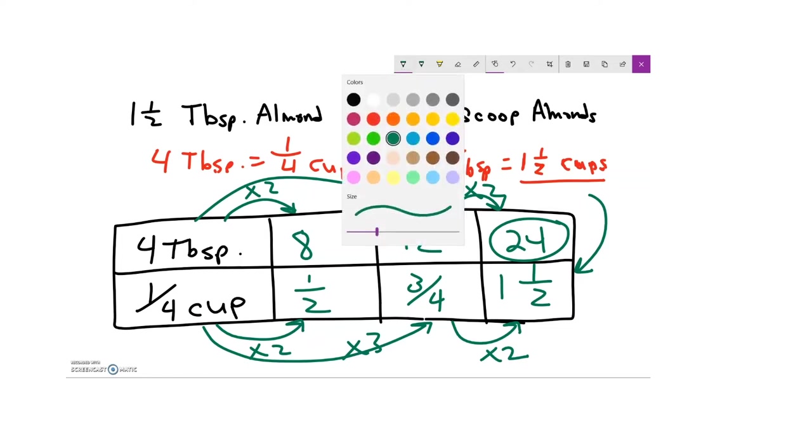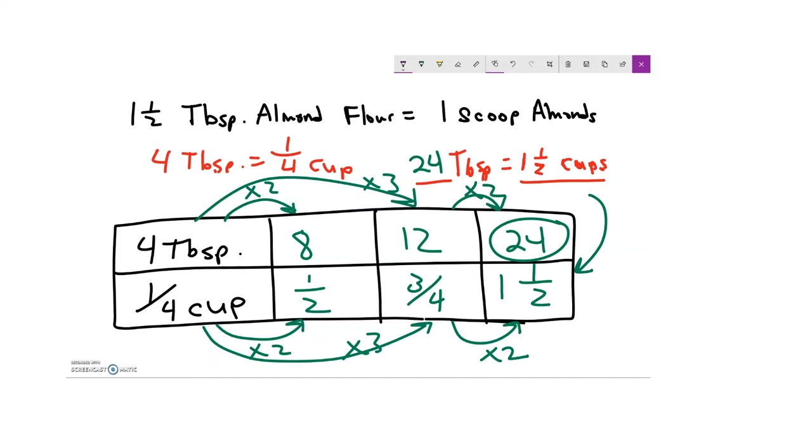Another way I could have done that is to figure out how many times does a fourth of a cup go into one and a half cups. And if I know that that is six, I can always multiply top and bottom by six to get 24 tablespoons in a cup and a half. But in any case, that is the answer to the first part of our question.